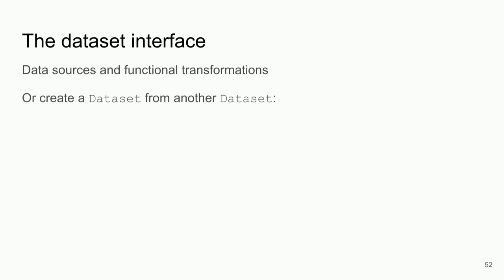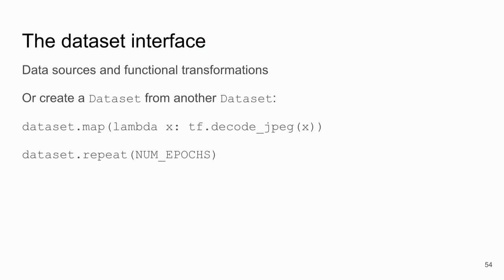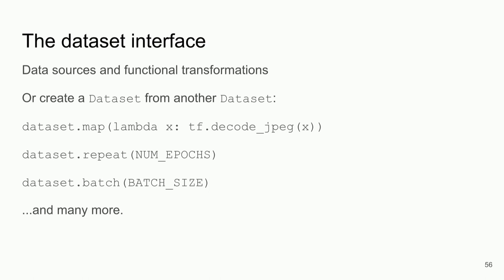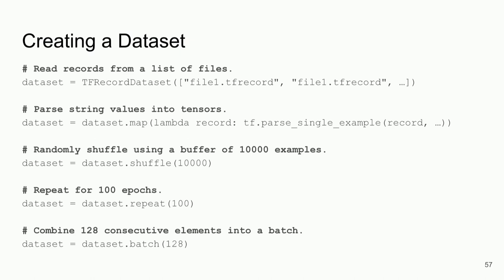You can also create a dataset from another dataset with a map operation for specific decoding or encoding, or a repeat where you have some number of training sessions. For batching, if you want a consistent number of data points — say every 30 consecutive data points, then the next 30 — you can do that too. Options include reading records from a list of files like tf.RecordDataset, mapping string values into tensors, shuffling, repeating, and batching.